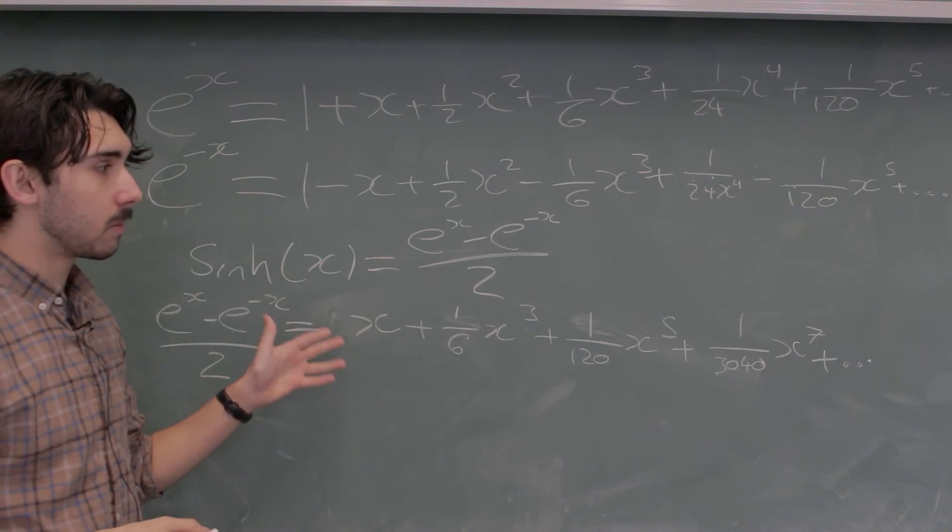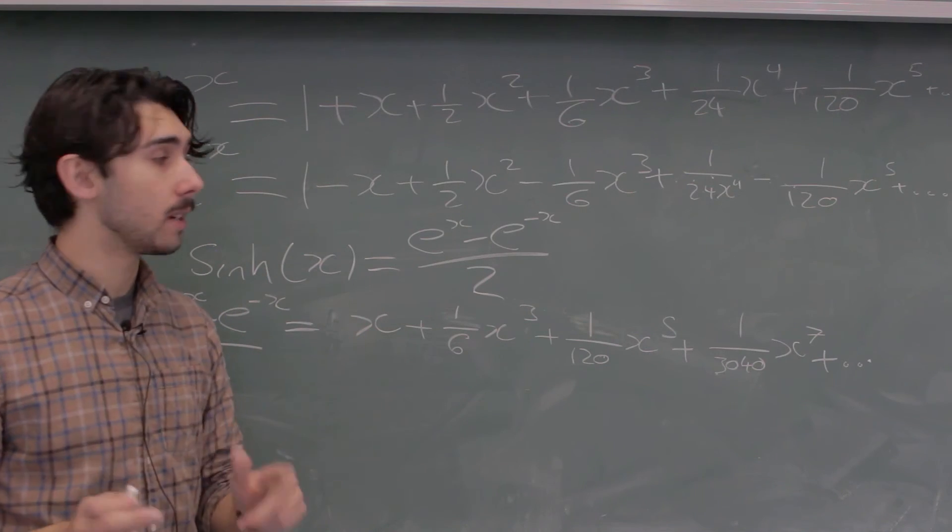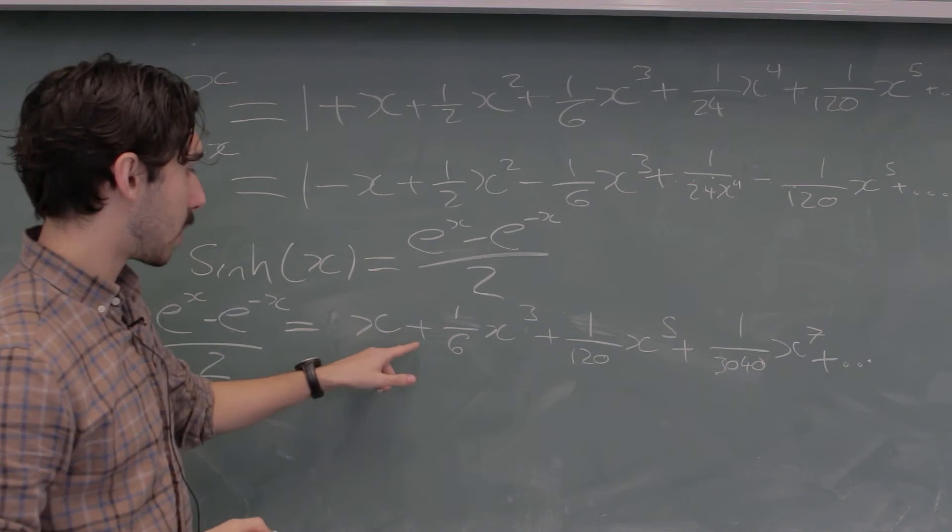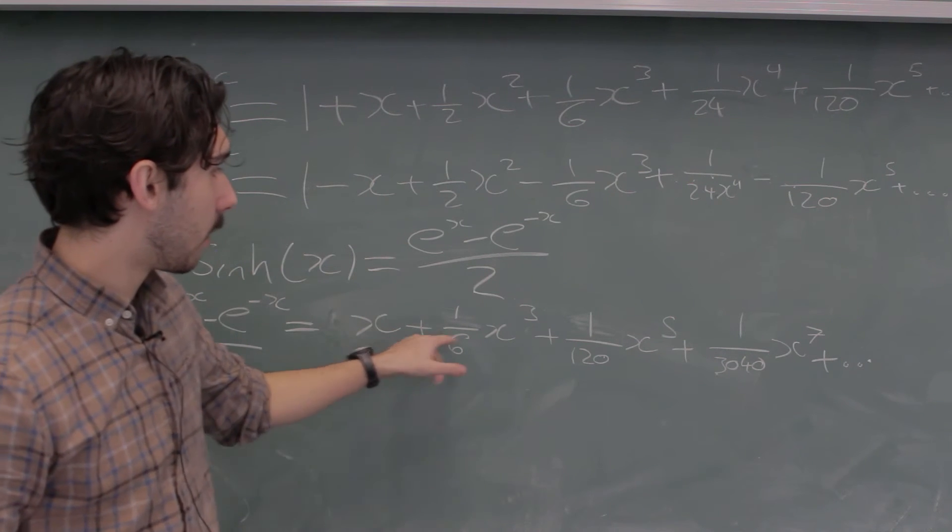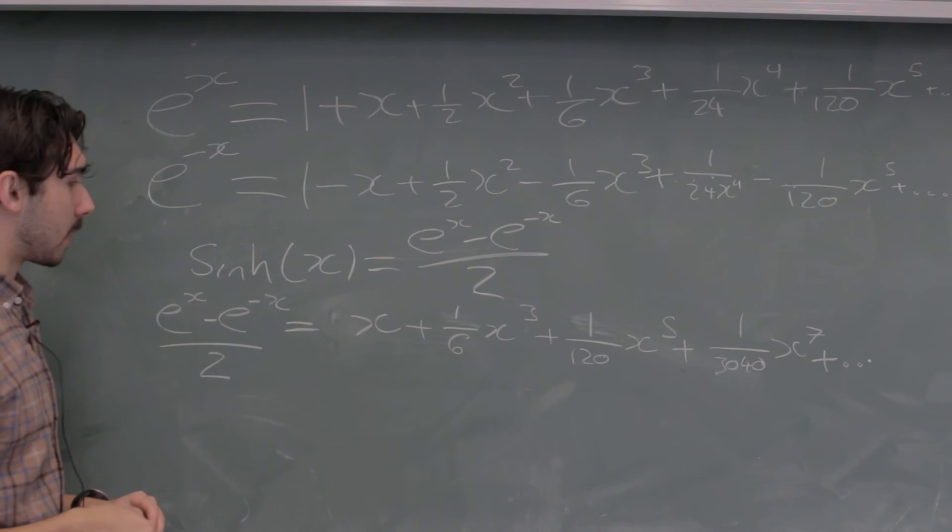Notice as well that this is the same as the Maclaurin Series for sine, but with sine these alternate between being positive and negative. So if it was sine, this would be negative, this would be negative, etc., but it's all pluses, it's all pluses. Lovely.